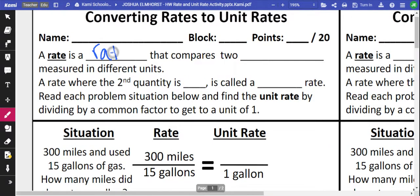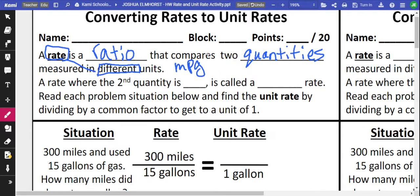A rate is a ratio that compares two quantities that are measured in different units. So as soon as we see rate, it's still a ratio, but it is a different unit. For example, miles per gallon.